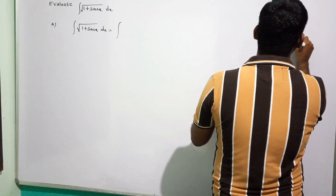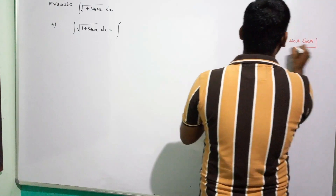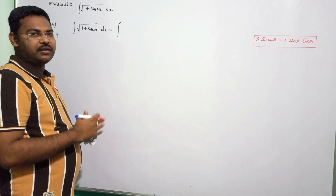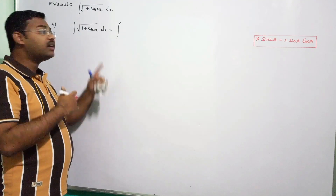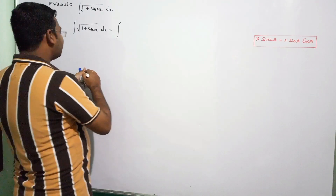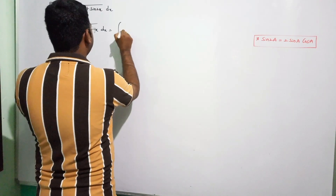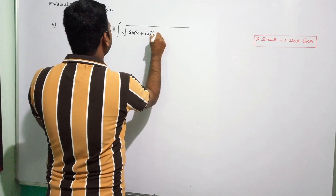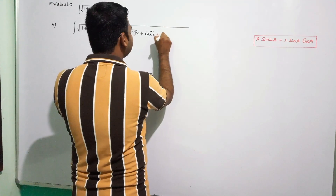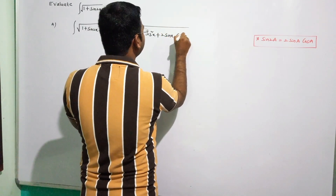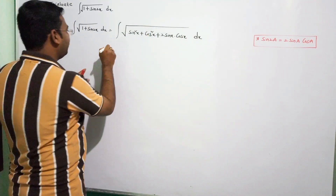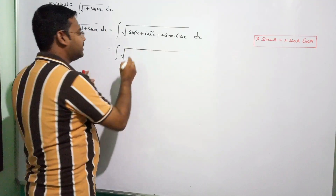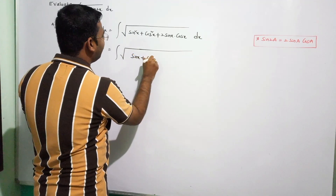Using the sin2a formula: 2sinA·cosA. So 1 + sin2x becomes 1 + 2sinx·cosx. That equals sin²x + cos²x + 2sinx·cosx, which is (sinx + cosx) whole square. So we have integral of √(sinx + cosx)².